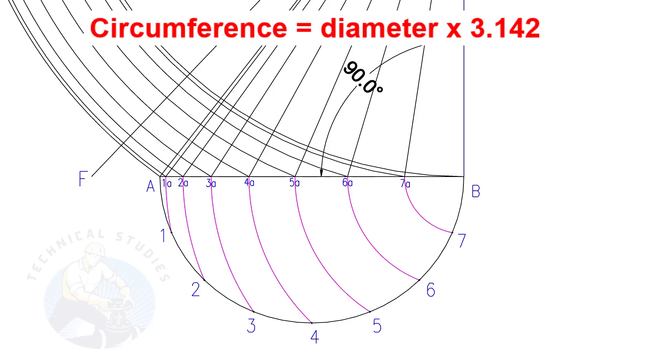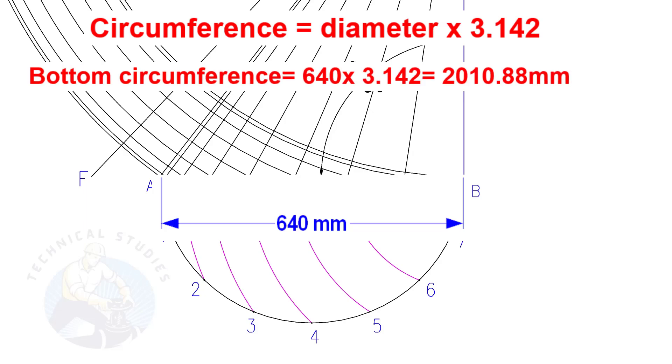Let us calculate the circumference of the bottom side. The formula is diameter multiplied by 3.142. Since the diameter is 640, multiply it by 3.142. The answer is 2010.8mm.